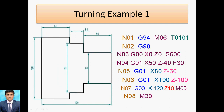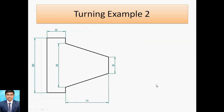To summarize: for linear interpolation we write G01; for rapid traverse when the tool is not in contact with the workpiece we write G00. X means your diameter, Z means the total length. The tool will move from point to point according to the Z value. This concludes example one.